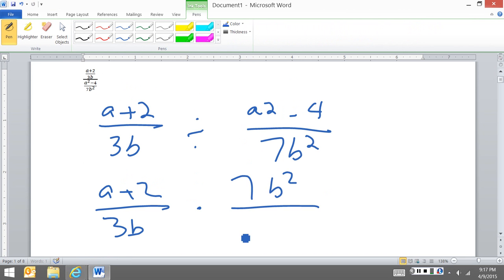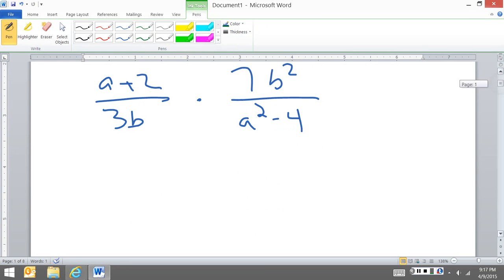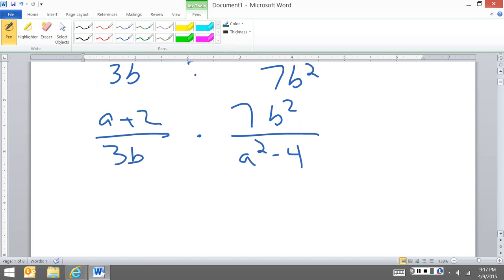Now that I've done that, I need to factor anything I can. Well, I can't factor the a plus 2, the 3b is stuck so this is going to stay, and 7b squared is fine. But I can factor this a squared minus 4, and this becomes (a minus 2)(a plus 2).